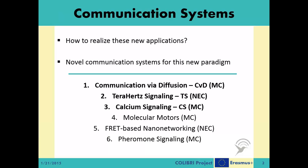Being a new and pioneering field, the keywords in nanonetworking research are not as concrete as they are in more established topics. Although we will be using the aforementioned names for the systems, they might be called with different names in the literature. For example, CVD might be called diffusion-based molecular communication or just diffusion communication. While the first, third, fourth and sixth systems are MC-based, the second and fifth ones are NEC-based.